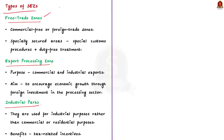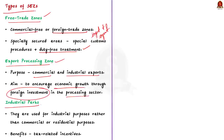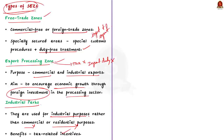Free trade zones, also called commercial free or foreign trade zones, are specially secured areas with special customs procedures and duty-free treatment, generally designated for processing imported and exported goods. Export processing zones are generally used for commercial and industrial exports, with the main goal of increasing economic growth through foreign investment. They offer benefits such as tax and import duty exemptions. Industrial parks are designated for industrial use rather than commercial or residential purposes and often have tax-related incentives.